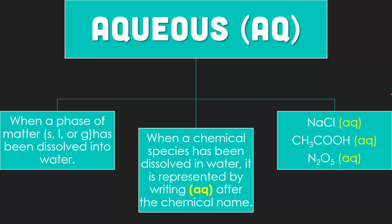Aqueous phase is when matter, solid, liquid, or gas has been dissolved into water. When a chemical species has been dissolved in water, it is represented by writing an AQ after the formula. Like the examples you see, you have NaCl aqueous, which means it's NaCl or salt mixed into water. Remember that aqueous is also known as a solution, so it's a homogeneous mixture.